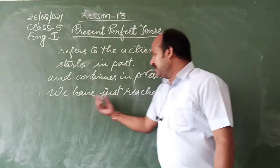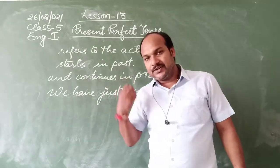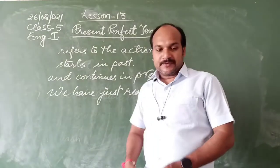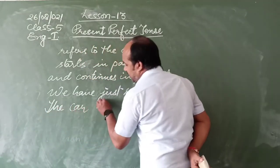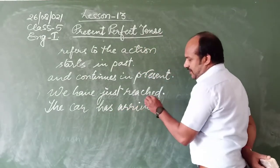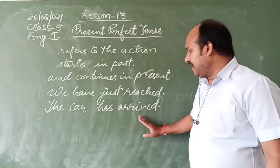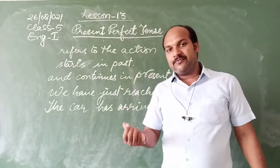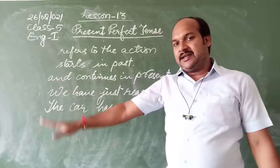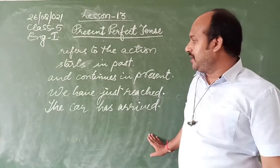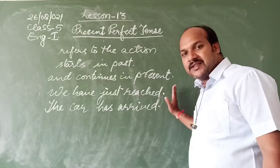The word 'just' refers to the action that has just happened or finished just now. One more example: 'The car has arrived.' When someone says 'the car has arrived,' that means the car came just a few minutes or seconds ago - it started in the past and finished in the present. Similarly, 'we have just reached' - they started in the past and now in the present they have reached and finished.